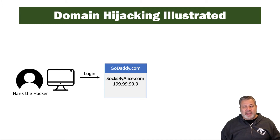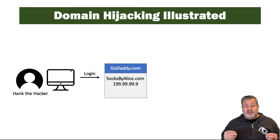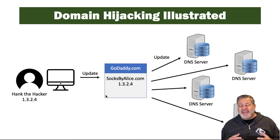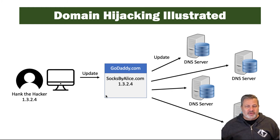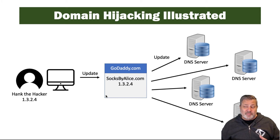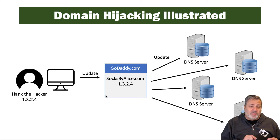In this case, Hank the Hacker has gained, by malicious means, login information to the GoDaddy server that's hosting SocksByAlice.com. The legitimate IP address — 199.99.99.9, a fake address made up for this example — is legitimately serving up SocksByAlice.com. Hank wants to change that so when people go to SocksByAlice it redirects them to a malicious site. Once logged into GoDaddy.com, he updates the record so that SocksByAlice points to 1.3.2.4, a malicious site that Hank owns, hosting a malicious version of the SocksByAlice website.